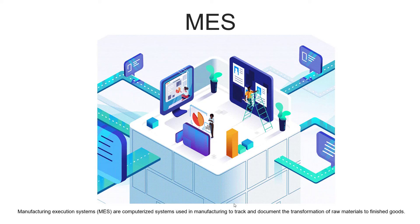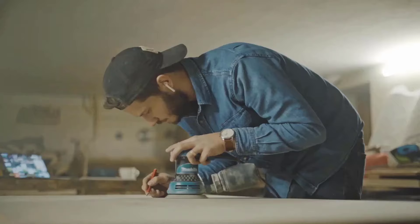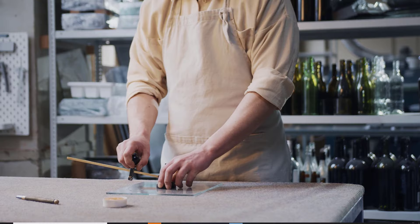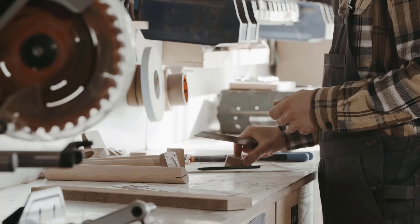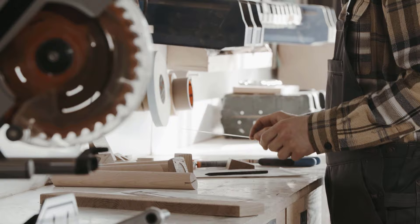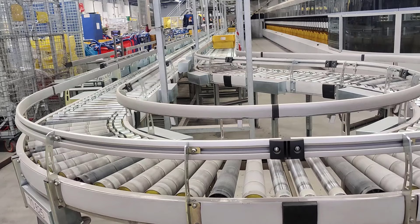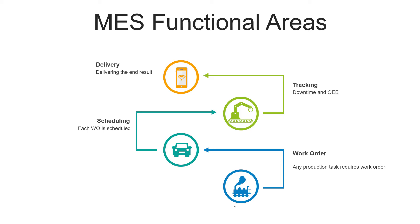MES system gives you better control over who is doing what. All instructions are delivered to the personnel working on a specified task — they are only provided with the few relevant paragraphs that help them do their job, instead of complete manuals. So the MES system gives you complete visibility of the whole production process.